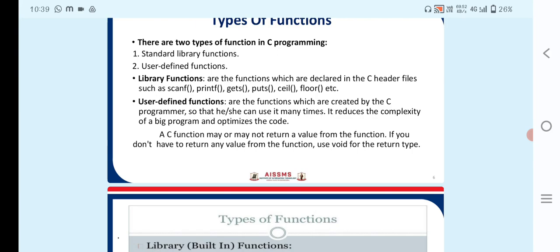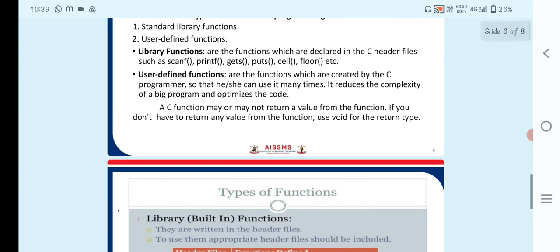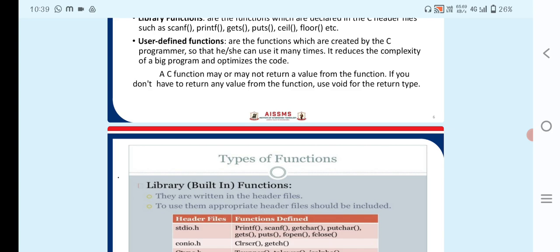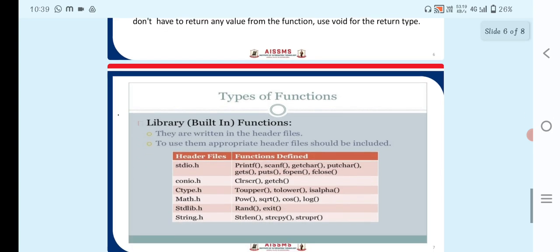C functions may or may not return a value from the function. If you don't have to return any value from the function, use void for the return type.